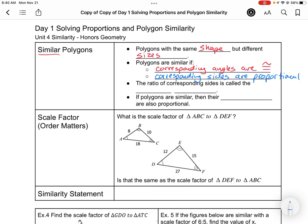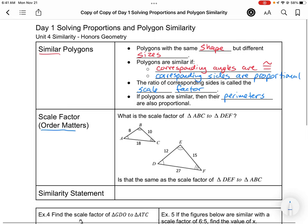The ratio of corresponding sides is called the scale factor. If polygons are similar, then their perimeters are also proportional. Just like when we talked about congruent statements, in similarity statements, the order does matter. When we talk about scale factor, that order matters. I want to compare the scale factor, which is that ratio of proportionality from one set of sides to their matching corresponding sides. You should be able to tell which sides go together because the order of individual sides also matters.